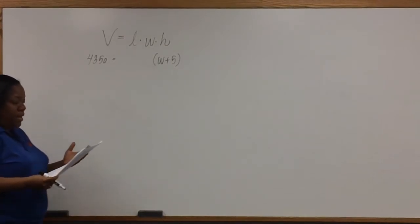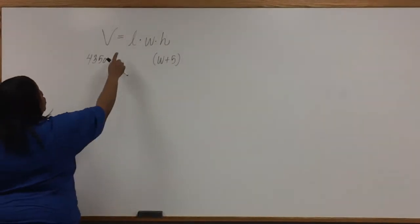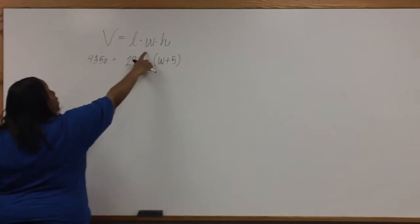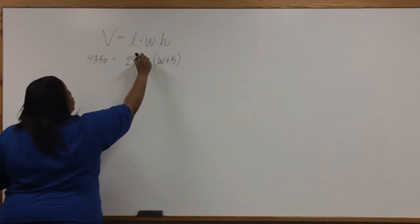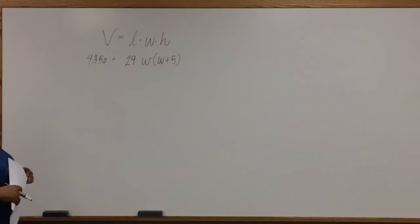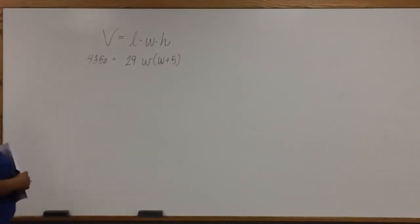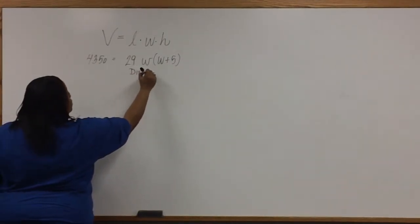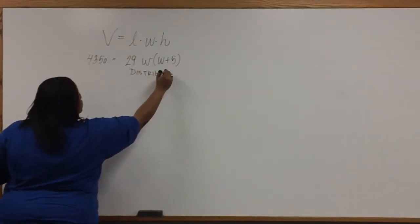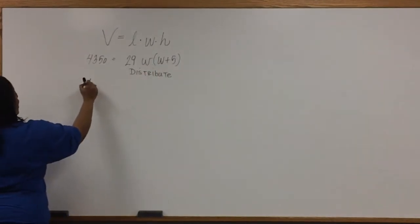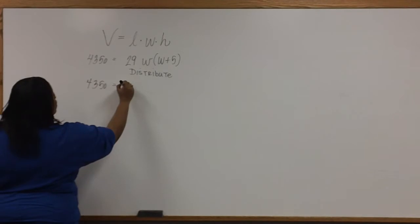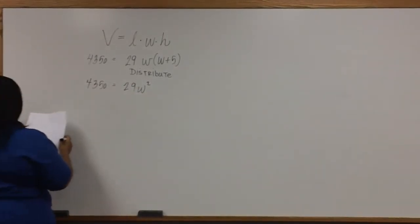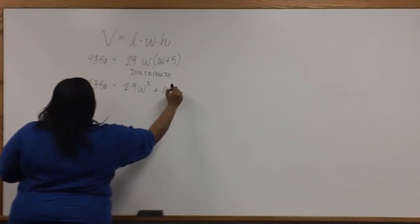We're also told that the length is 29, so in place of L, we can put 29. Notice that we aren't given any information about the width, so what we'll do is just bring that W down. The first thing we'll need to do in order to set this equal to zero is distribute 29W. After distributing 29W, we have 29W squared plus 145W.